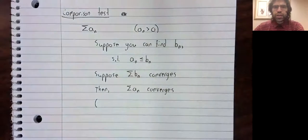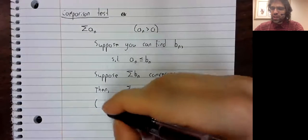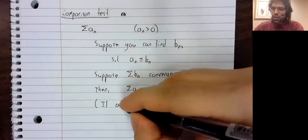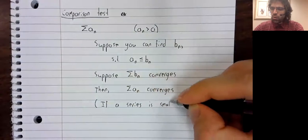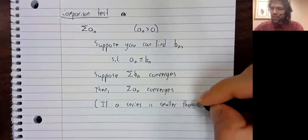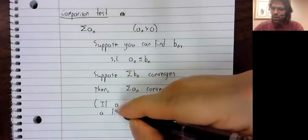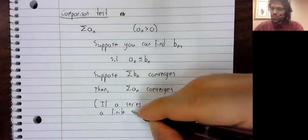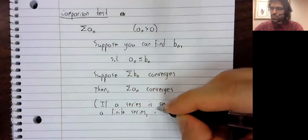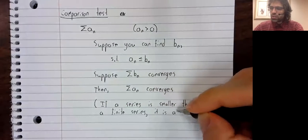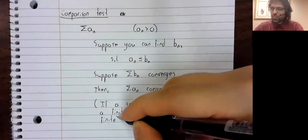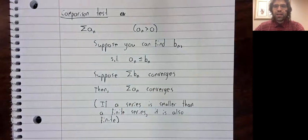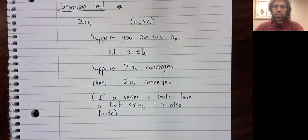And intuitively, all this is saying is that if a series is smaller than a finite series, it is also finite. You can't have an infinite quantity be smaller than a finite quantity.